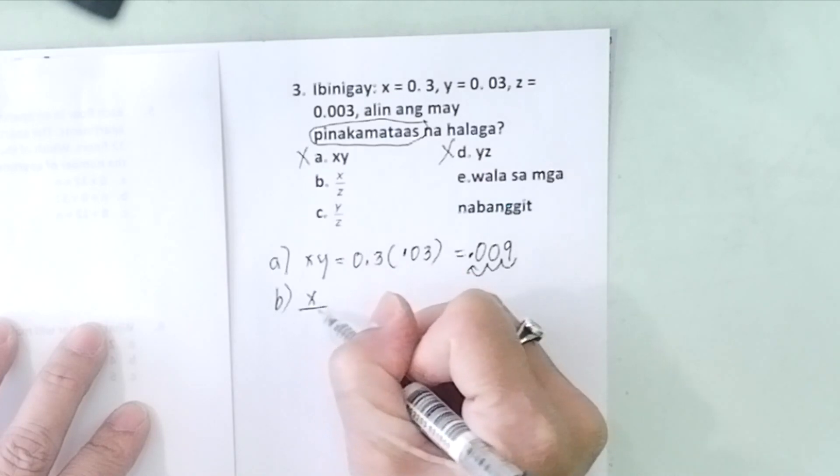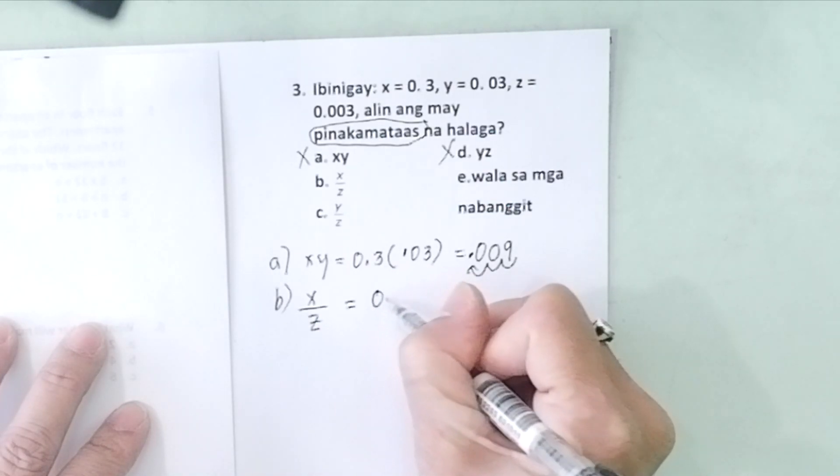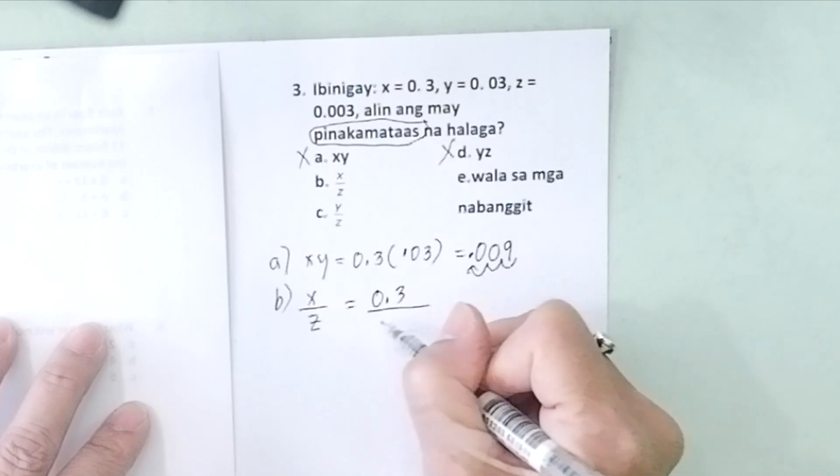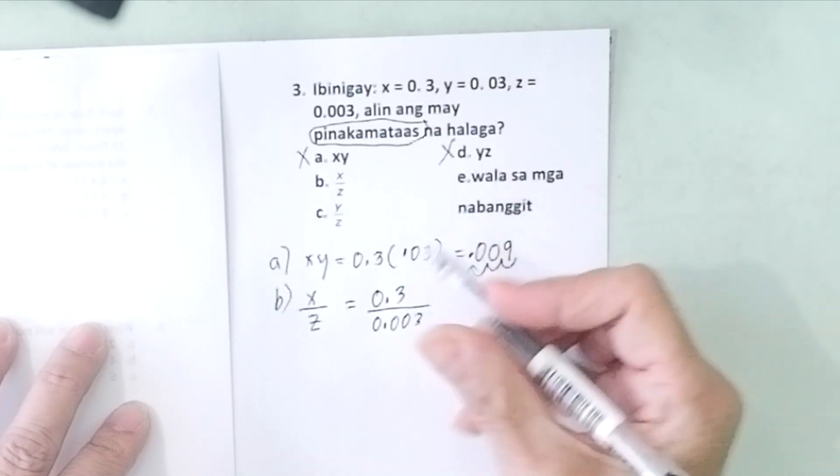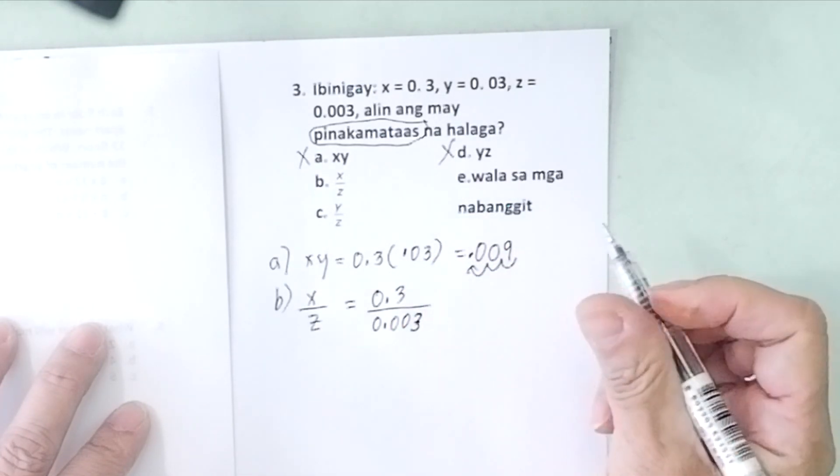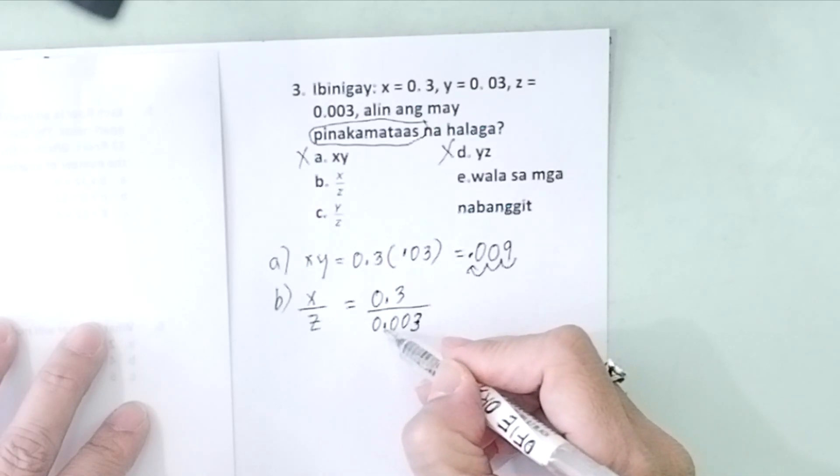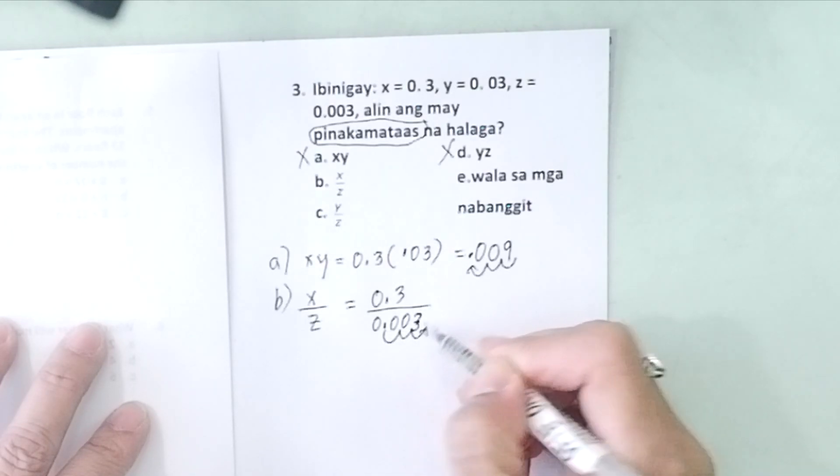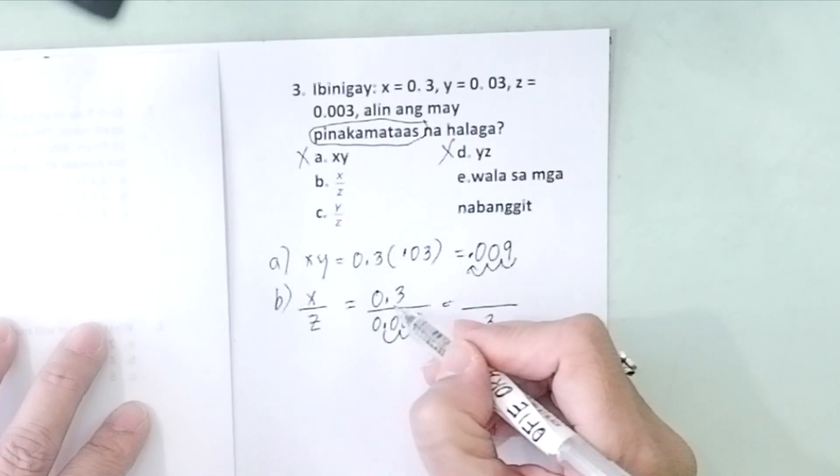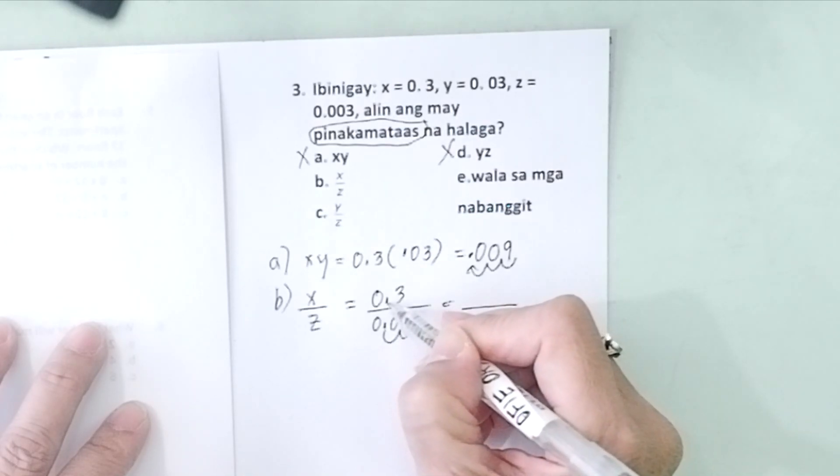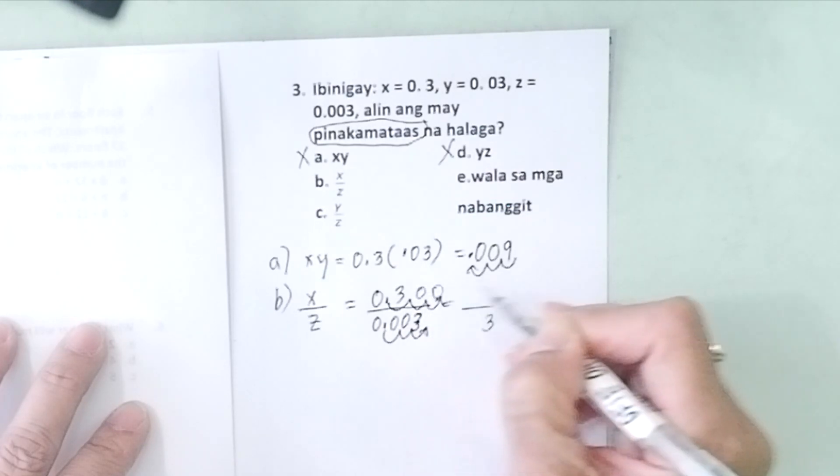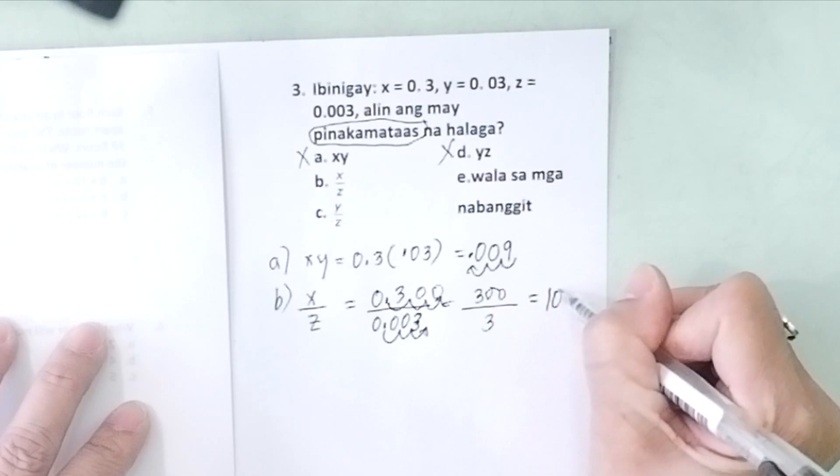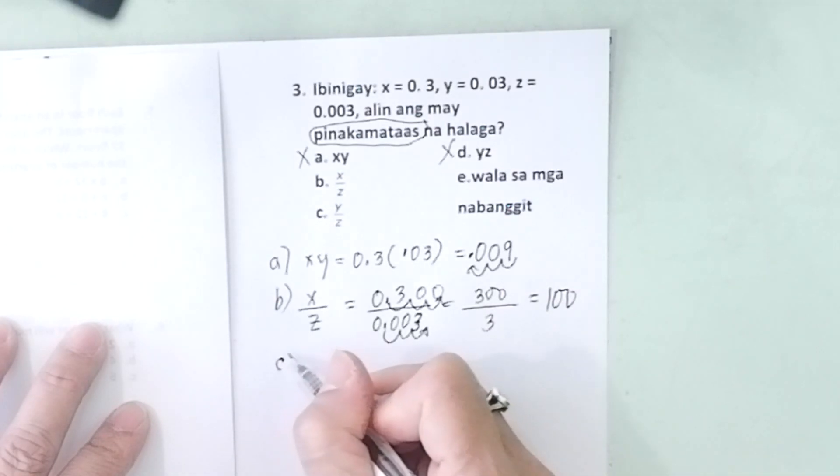Let us now try B and C. B is x over z: x is 0.3 over z is 0.003. How do you do that? 1, 2, 3, so this becomes 3. Move the decimal 3 places, you also do it here: 1, 2, 3, so this becomes 300. Over 3 is 100.